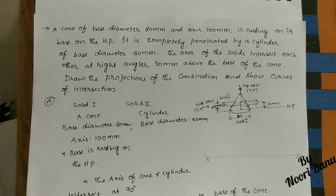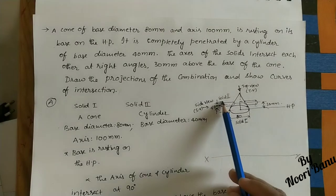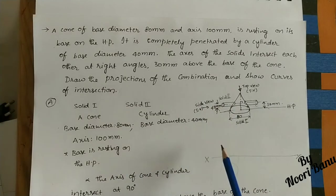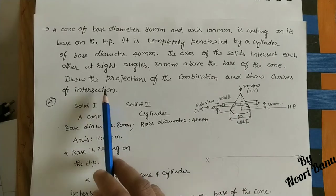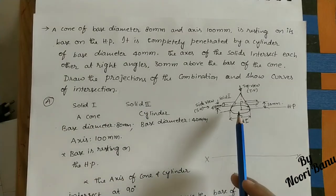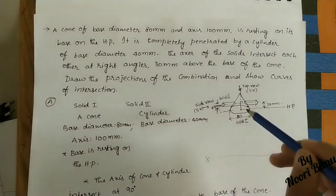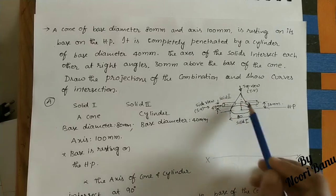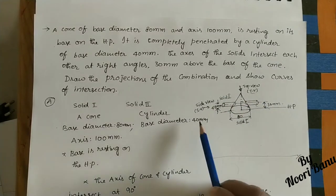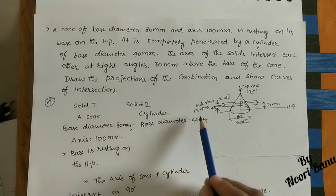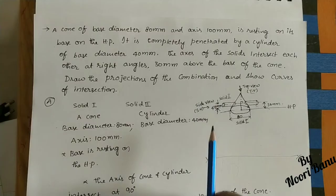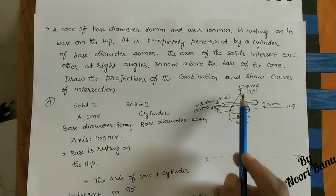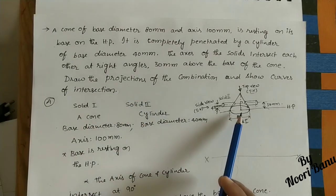Hi friends, welcome to my channel. In today's class we will discuss intersections of solids. In this topic, we take two solids — solid one and solid two. Solid two penetrates into solid one; when one solid penetrates into another, it is called intersection of solids. We have to draw the projections of the combination: the front view, top view (TV), and side view (SV).